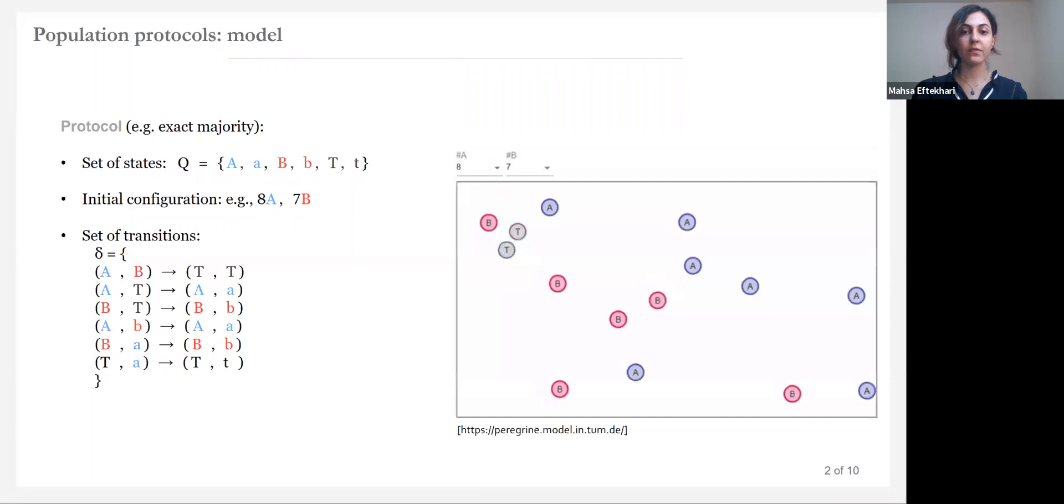A simulation from Peregrine for this protocol helps us to see that in a configuration with exactly one more of A agents, eventually the majority convinced the whole population to drop vote B.